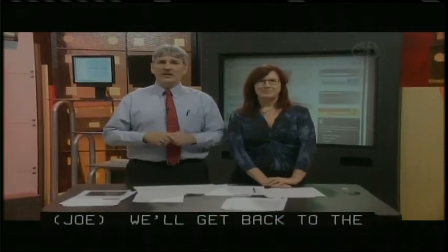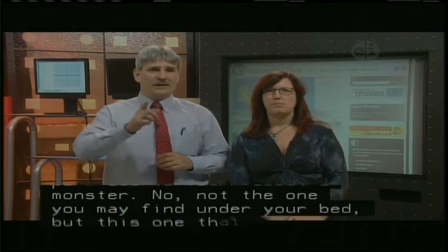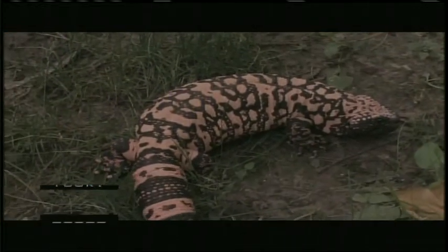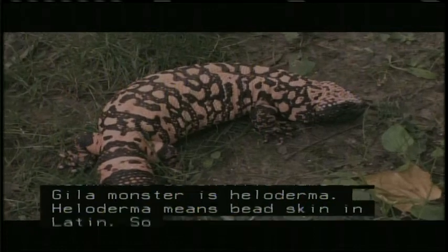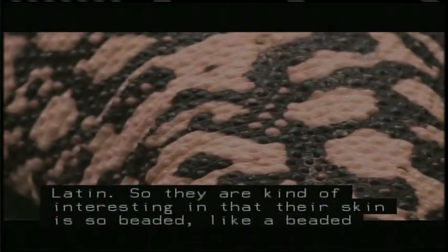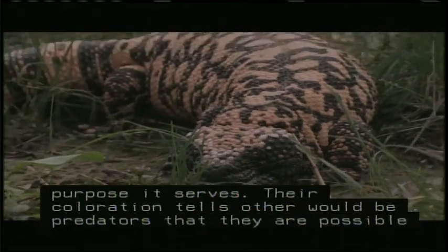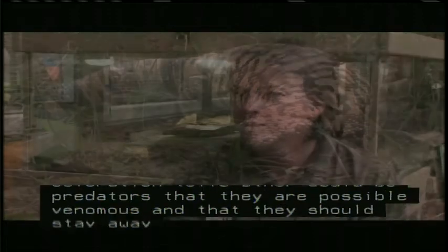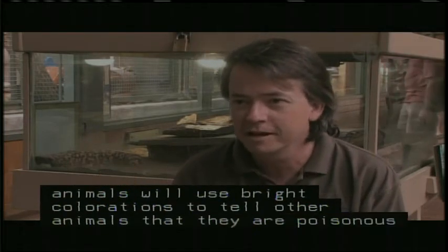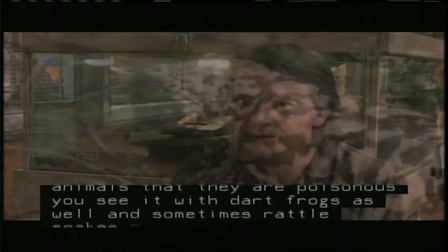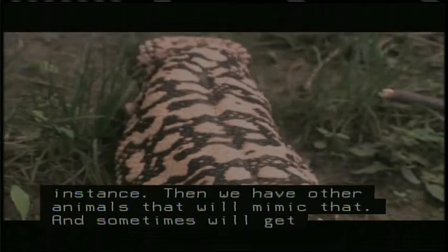We'll get back to questions in just a minute, but tonight we head to the Seneca Park Zoo to learn more about a monster. Not the one you might find under your bed, but the one that lives in parts of North America. The scientific name for the Gila monster is Heloderma. Heloderma means bead-skinned in Latin, so they're kind of interesting in that their skin is so beaded like the beaded lizard. It gives them a lot of texture. Not sure what purpose it serves. Their coloration also tells other would-be predators that they're possibly venomous and they should stay away. A lot of animals will use bright colorations to tell other animals they're either venomous or poisonous. We see it with dart frogs, rattlesnakes, or coral snakes.